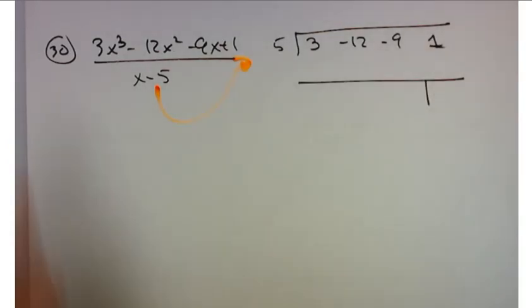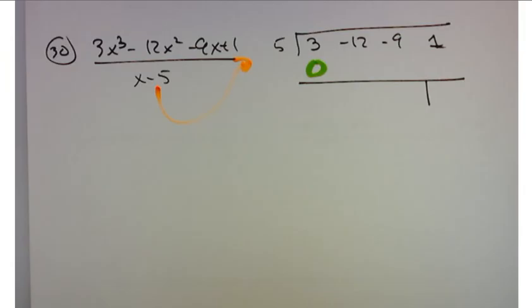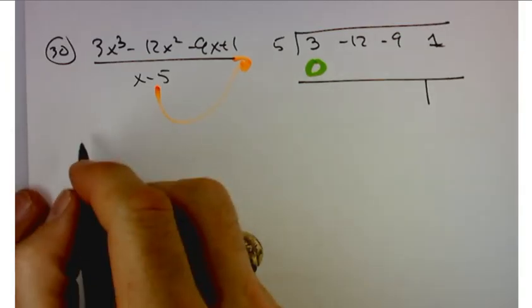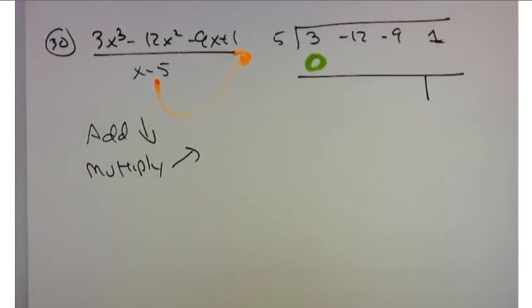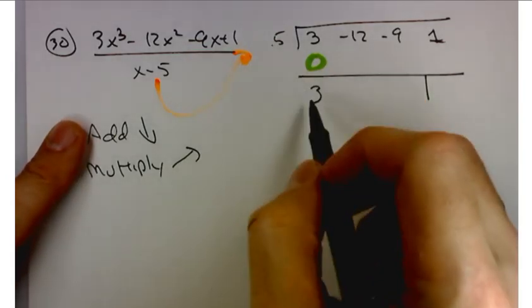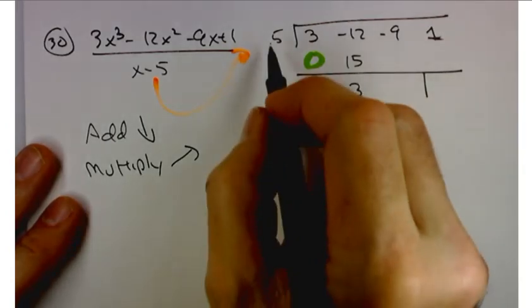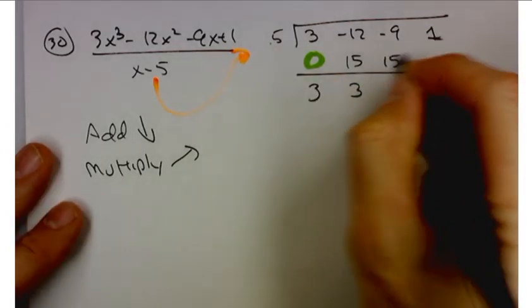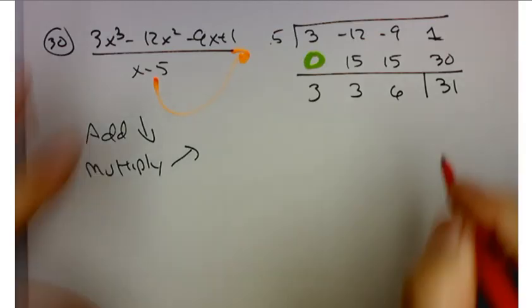Leave yourself a line of space. Right underneath the 3 we put a 0, because synthetic division works by a series of adds and multiplies — you add to go down and multiply to go up. So: 3 and 0 gives me a 3; multiply to go up, 5 times 3 gives me 15. This process repeats — add to go down gives me another 3; 5 times 3 gives me 15 again; then 6, then 30, and 31. That last term is your remainder.